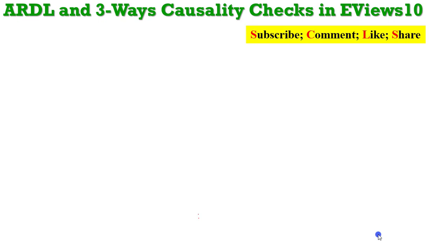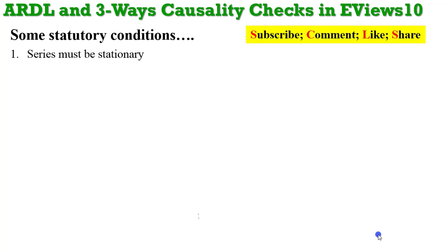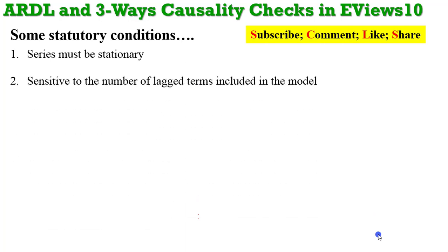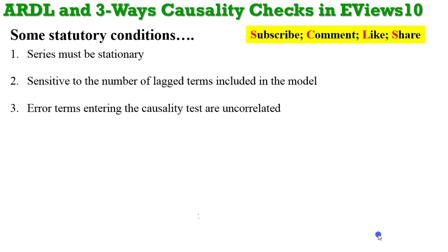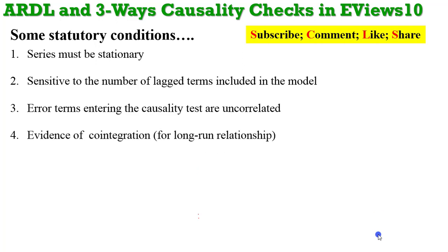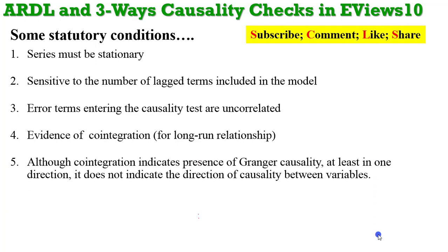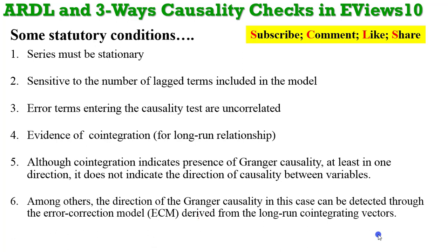In ARDL modeling, some conditions must be in place. The series must be stationary. The model is sensitive to the number of lags used. The error terms in the model must be serially uncorrelated. If you are talking about a long-run relationship, then there must be evidence of co-integration. Although co-integration indicates the presence of Granger causality in at least one direction, it does not indicate the direction of causality between the variables. The direction of causality can be detected through the error correction model derived from the long-run co-integrating vectors.